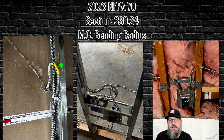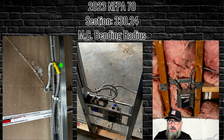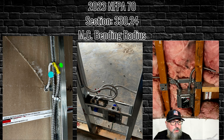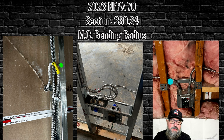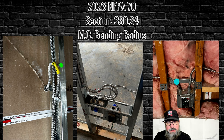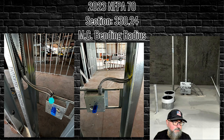Now here are examples of what I see in the field — MCs bent beyond the minimum radius. This one right here is way over-bent and will cause damage; it needs to be corrected. Same here — that doesn't look like seven inches; there's a lot of strain on that MC. What I see most often is when guys put MC into boxes through the tombstone knockouts in the wall studs — that puts way too much strain on the MC and doesn't achieve the proper bending radius. Again, too much strain out of the connector — over the bending radius.